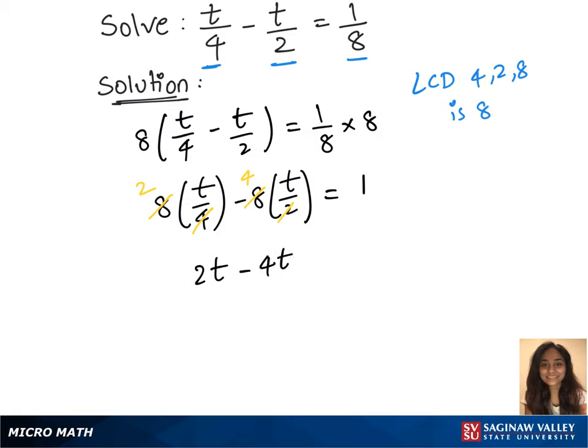We get 4t equals to 1. 2t minus 4t is -2t equals to 1. Divide -2 on both sides. That gives us t equals to -1/2.